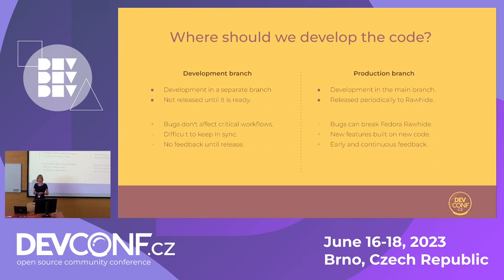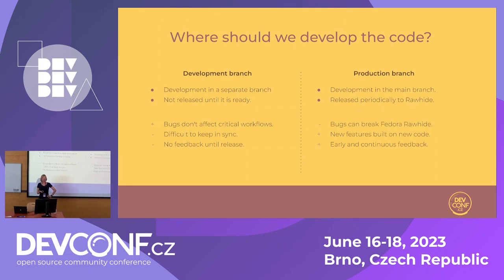The other option was to use the production branch, which has a lot of benefits — but you can very easily break Fedora Rawhide and you don't want to do that. There was a lot of pressure to make it right, so we did very thorough pull request reviews. We spent most of the time making sure we didn't forget any use cases before we made a change. That was very difficult, but considering the amount of work we did, we didn't mess up so much.